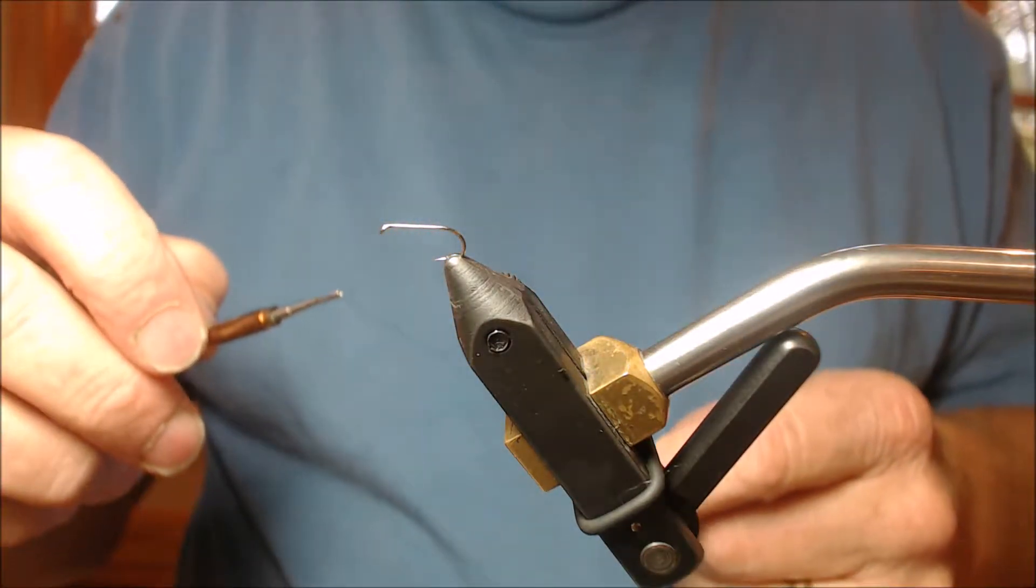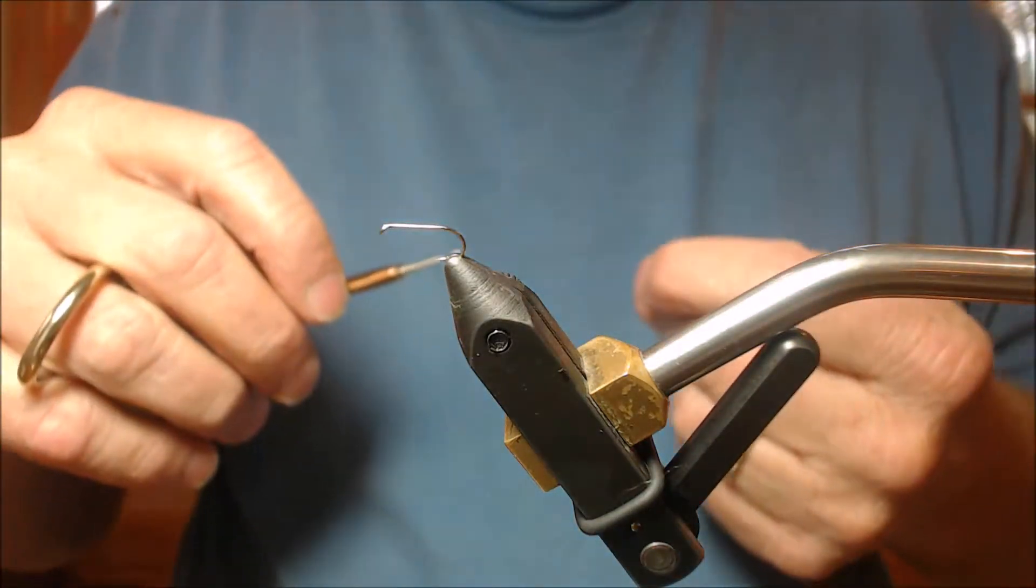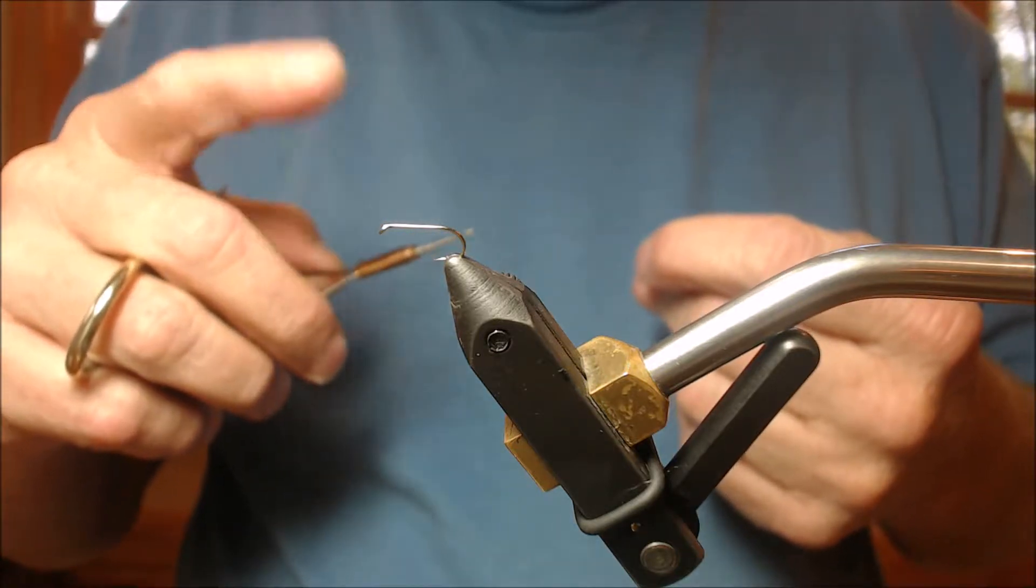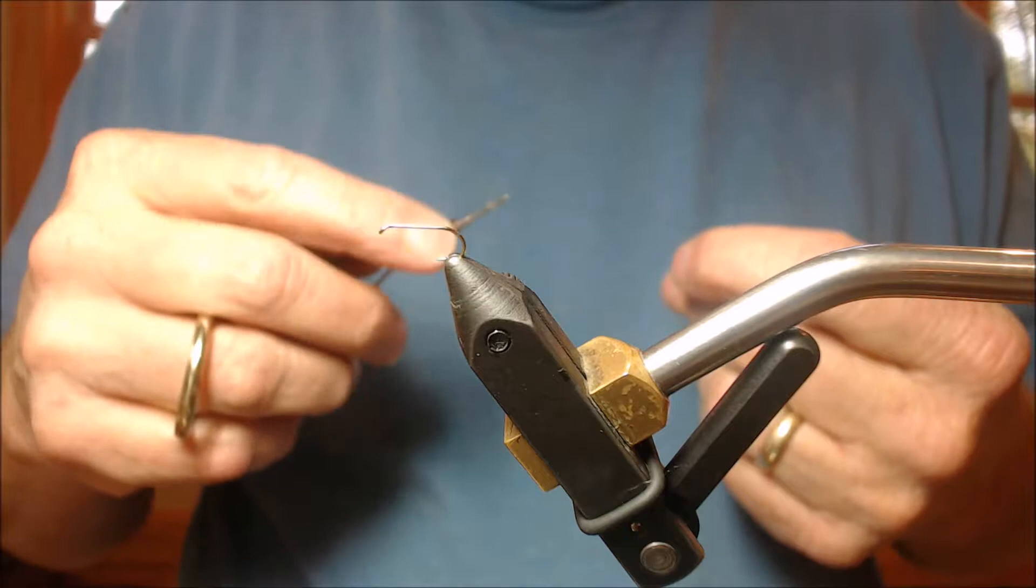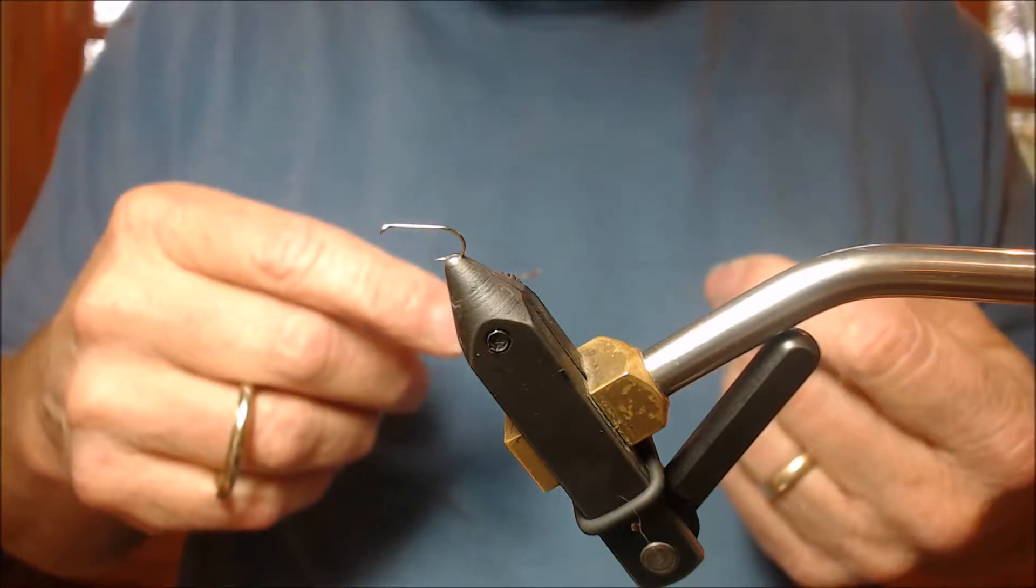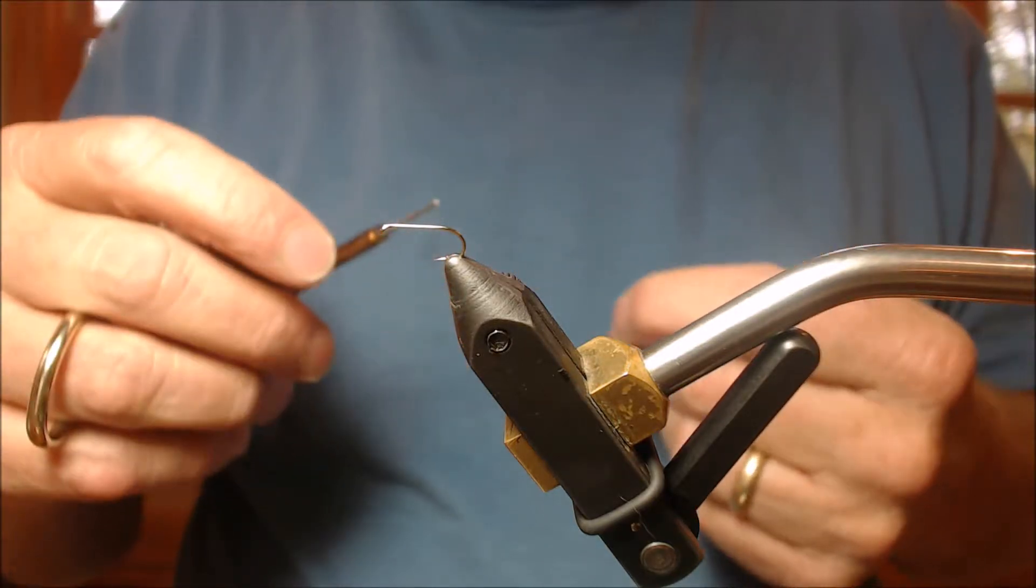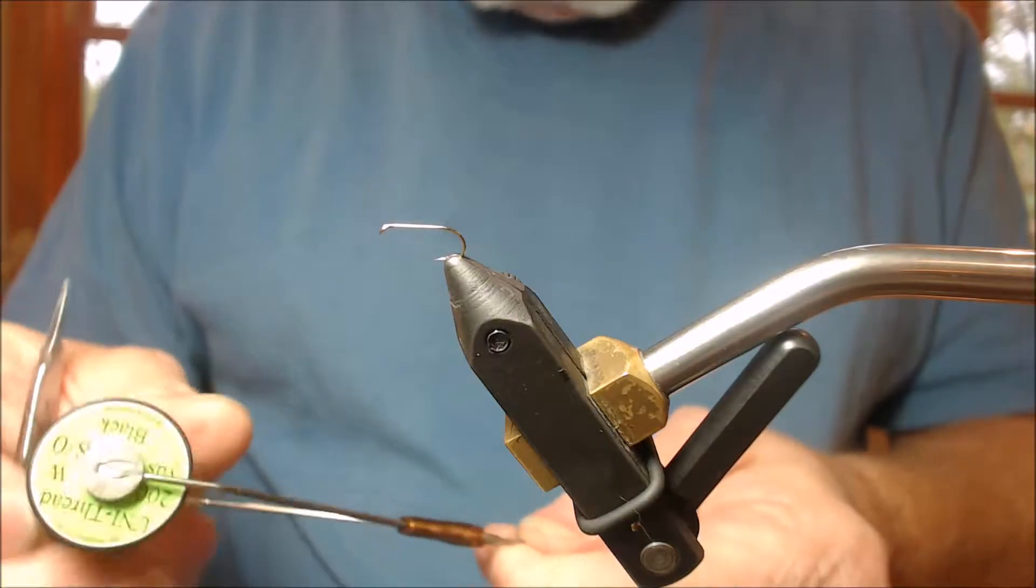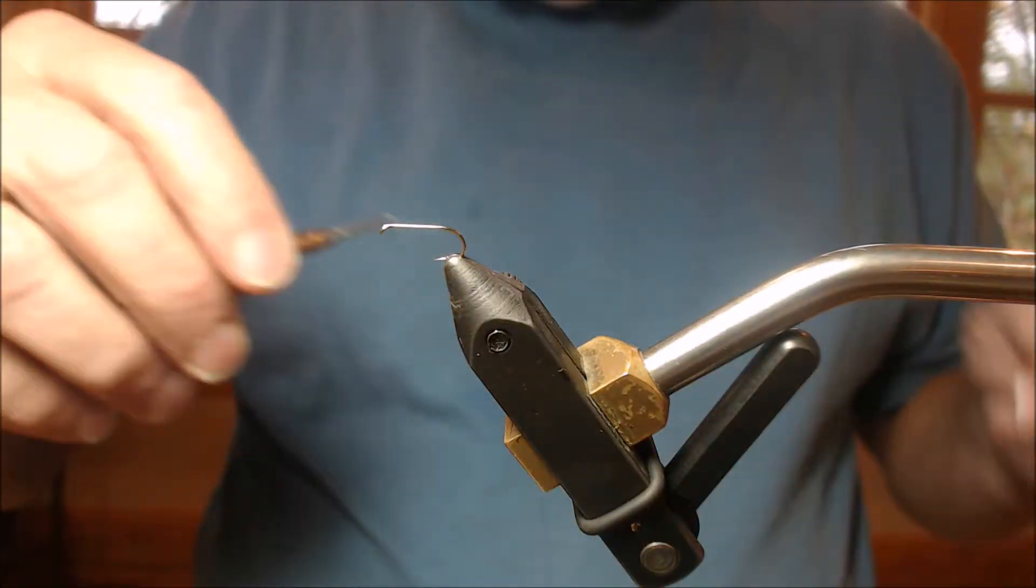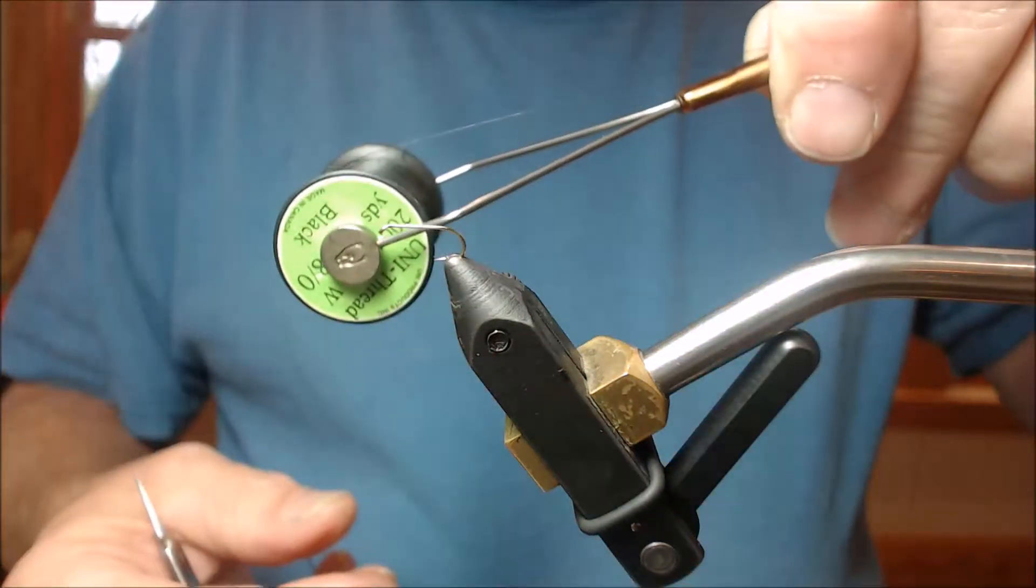Today we're going to tie a spent wing caddis. One of the things I like about this pattern is the fact that it could land as a dry fly upside down or right side up, doesn't matter. Gives the same profile on the water surface either way. Kind of neat when you have to worry about your other dry flies landing a certain way.